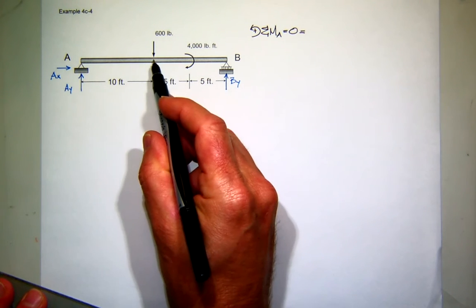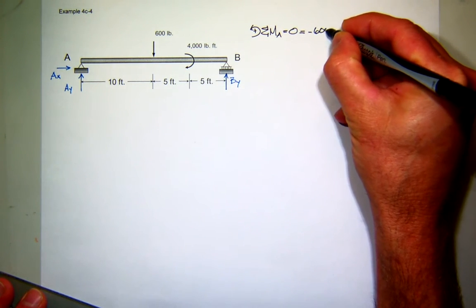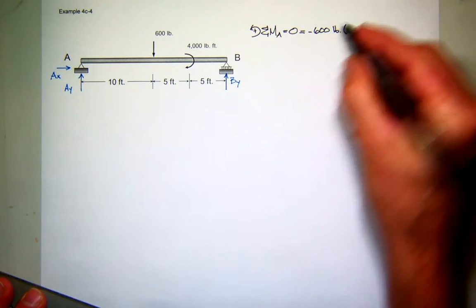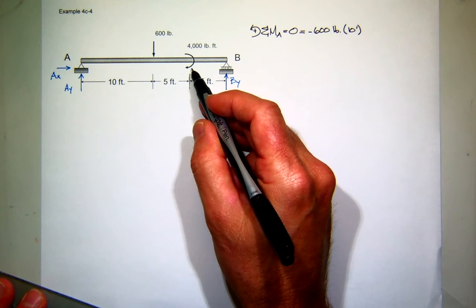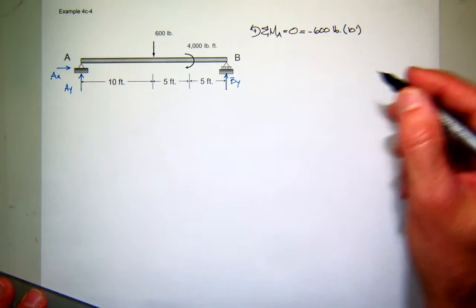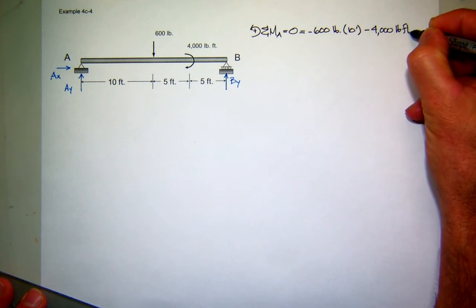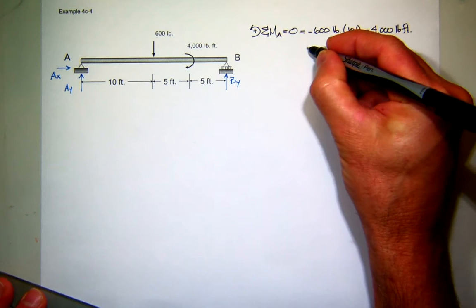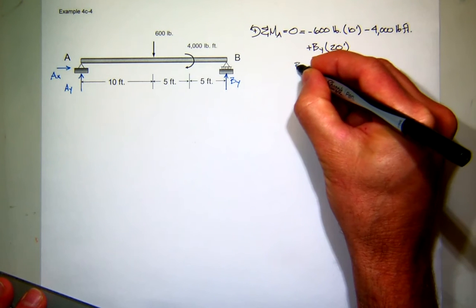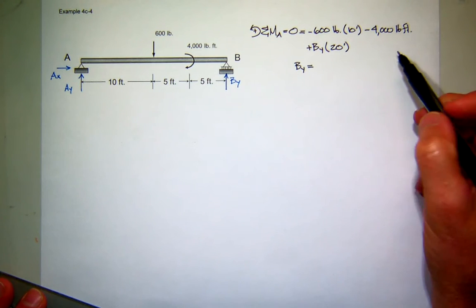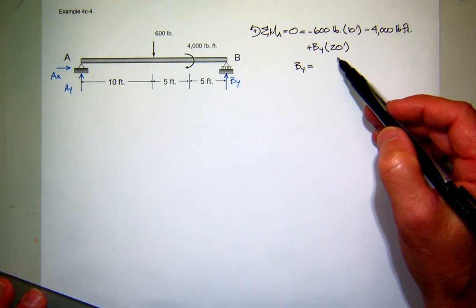In summing moments about A, the 600-pound force creates what? Negative or positive moment? Negative. So I've got negative 600 pounds, and the moment arm is 10 feet. Then I have the actual couple, which creates negative moment according to my sign convention. So that'll just be minus 4,000 pound-feet. And then I have my reaction force B_Y, creating positive moment with the moment arm of 20 feet. So what is B_Y equal to? This looks like 6,000 plus 4,000 is 10,000, divided by 20. That's 500.